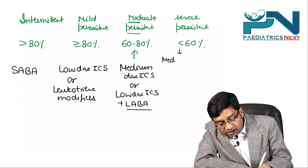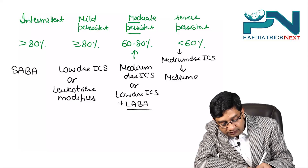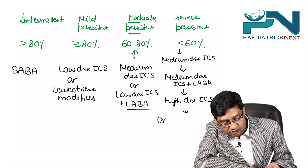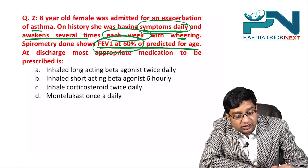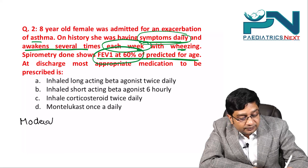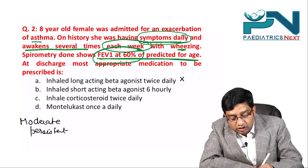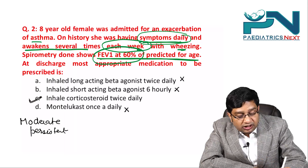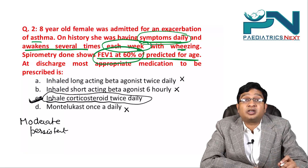In severe persistent asthma, start with medium-dose ICS. If no response, add long-acting beta agonist. If still no response, switch to high-dose ICS. No response — proceed to oral steroids. For this question, it is moderate persistent asthma. Long-acting beta agonist alone is never correct. Short-acting is for intermittent. Montelukast is for mild persistent. The most appropriate answer is inhaled corticosteroids given twice daily.